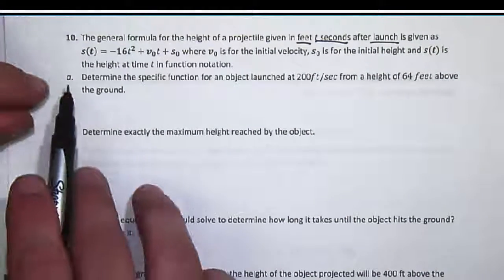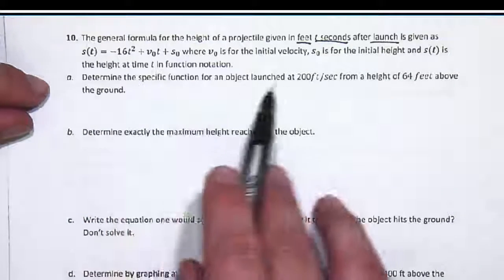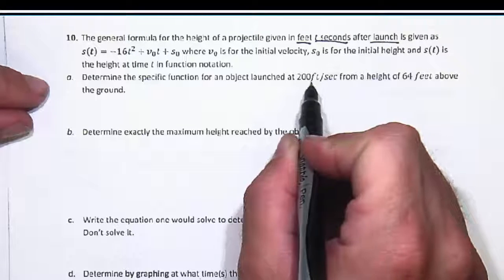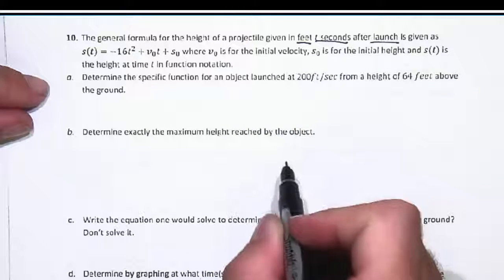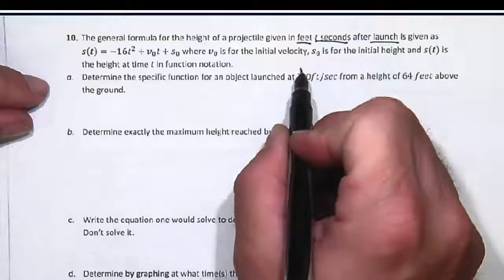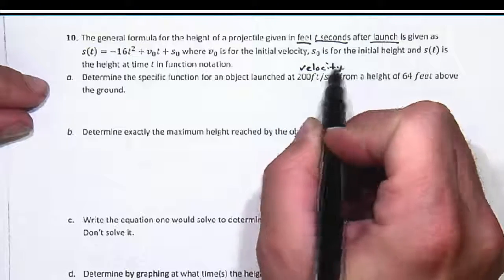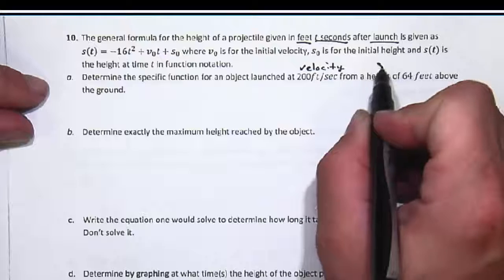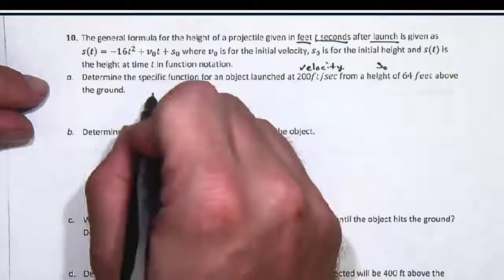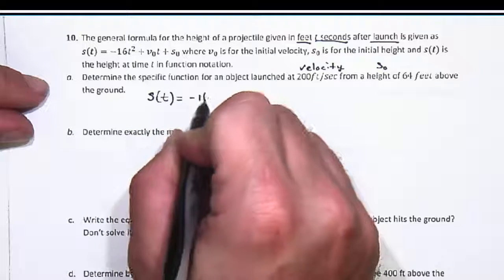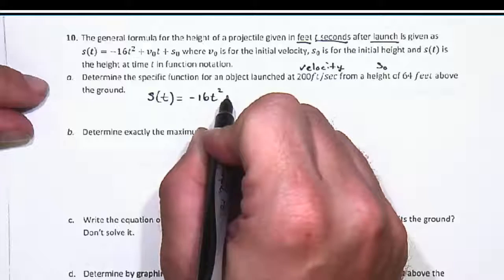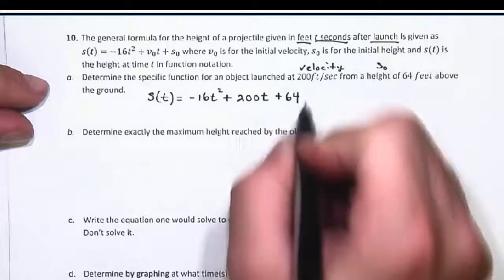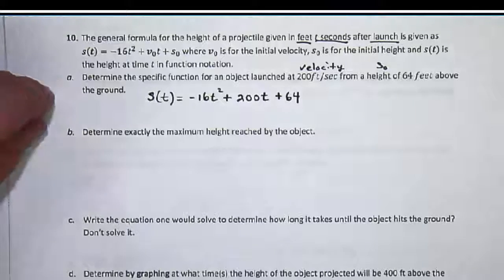In part a, we have to determine the specific function for this particular object. The object is launched at 200 feet per second - that's a velocity. And from a height of 64 feet, that's our initial height. So the specific function for this is s(t) equals negative 16t squared plus 200t plus 64. That was the answer to that first one.